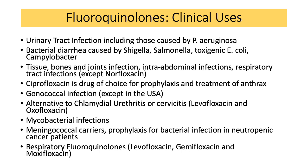Clinical uses of fluoroquinolones include urinary tract infection, including those caused by Pseudomonas aeruginosa — unlike the previous drugs which have resistance against Pseudomonas. Also bacterial diarrhea caused by Shigella, Salmonella, toxigenic E. coli, and Campylobacter; tissue, bone, and joint infections; intra-abdominal infections; and respiratory tract infections, except for norfloxacin. Ciprofloxacin is the drug of choice for prophylaxis and treatment of anthrax caused by Bacillus anthracis. Gonococcal infections, though because of high resistance rates in the U.S., it is no longer used there. Alternative for chlamydial urethritis or cervicitis, specifically levofloxacin and ofloxacin. This is a second-line agent for mycobacterial infections and prophylaxis for bacterial infections in neutropenic cancer patients.